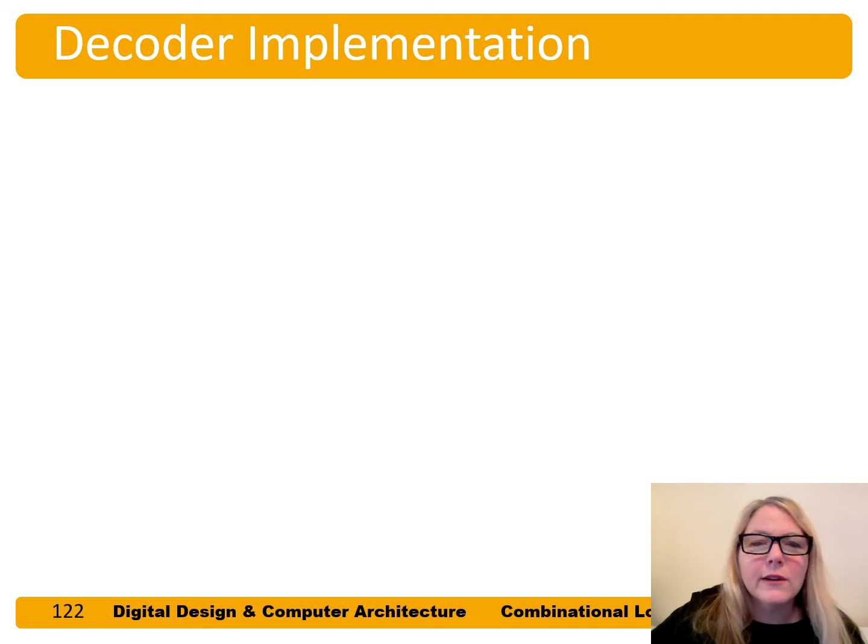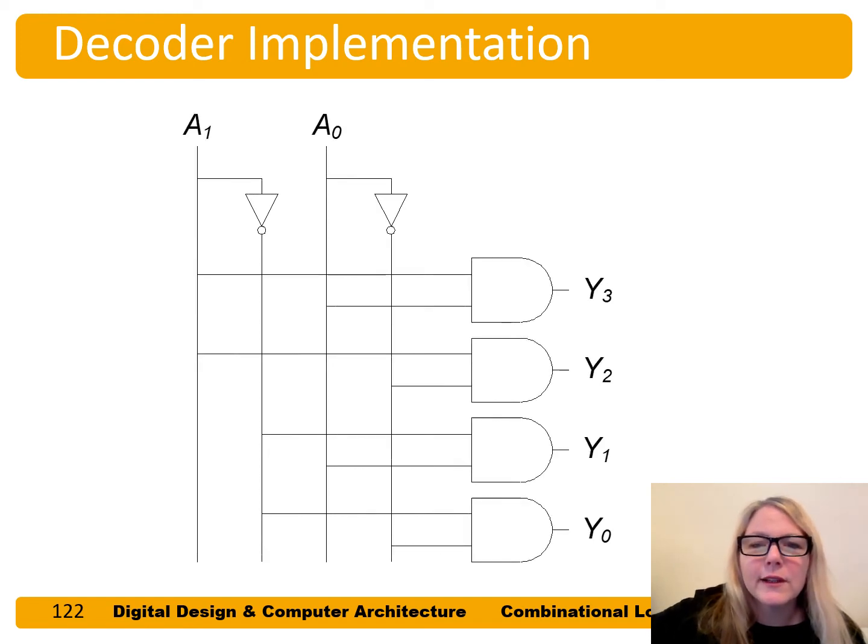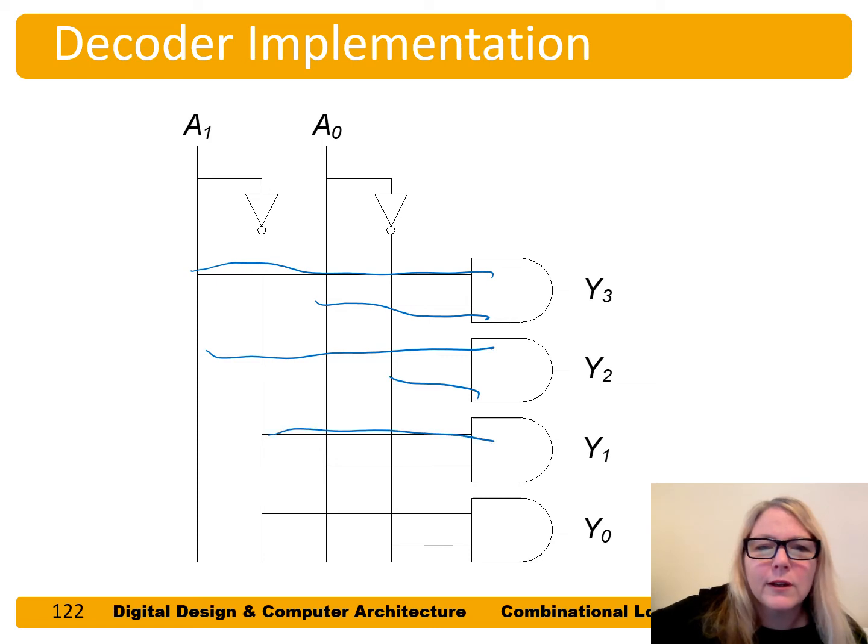And so how do we implement decoders? We just basically did it in that last slide where we showed that each of the outputs is actually a minterm. And so here we go, Y3 is A1 and A0. Y2 is A1 and A0 bar. Y1 is A1 bar and A0, and Y0 is A1 bar and A0 bar.